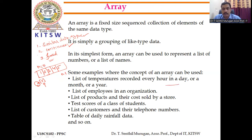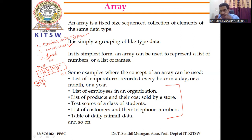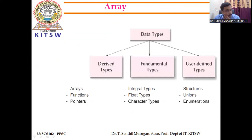Some examples of arrays include: a list of employees in an organization, a list of products and their costs sold by a store, test scores of a class of students, student mark sheets, customer telephone numbers, daily rainfall data, and so on. Any collection of similar data is considered an array.